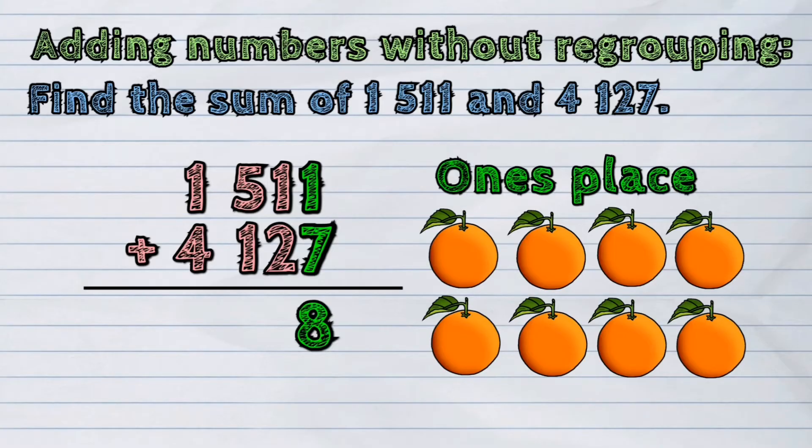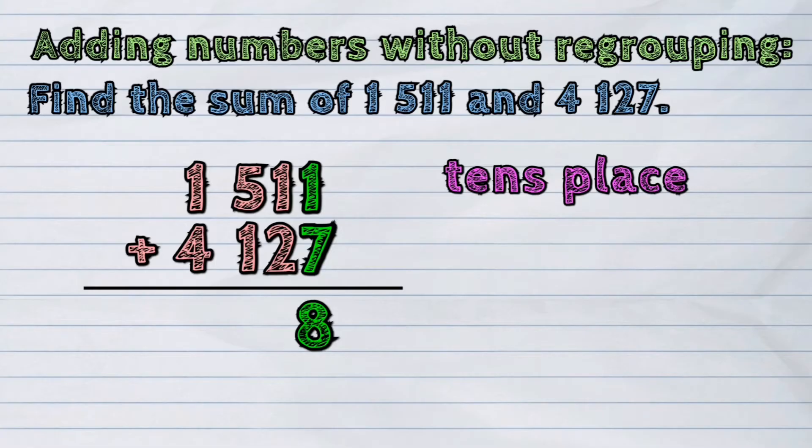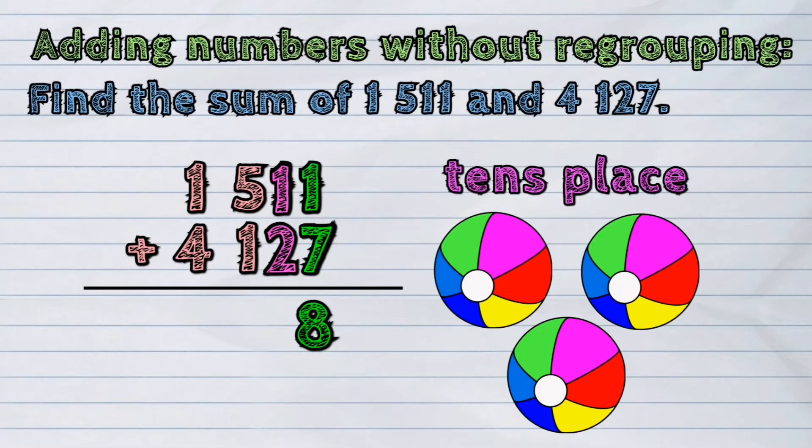And next, we will add the digits in the 10's place. Adding 1 and 2 gives the sum of 3.